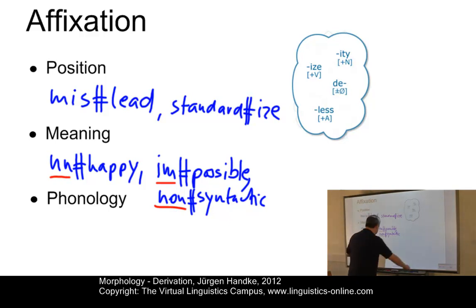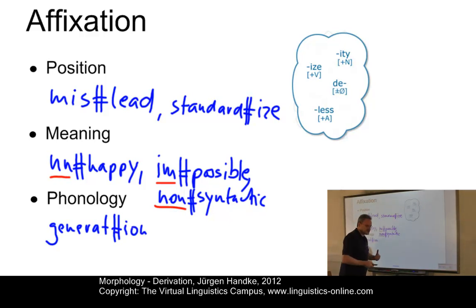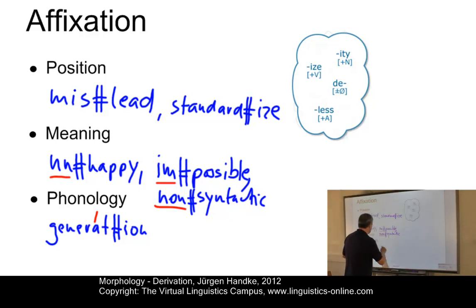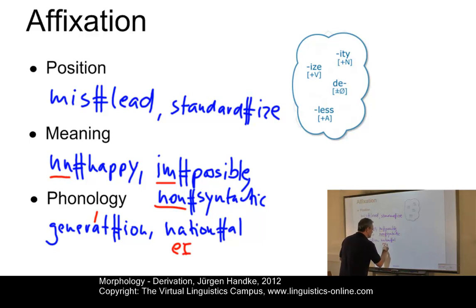Let's look at some examples. In something like 'generation,' we can observe a stress shift from 'generate' to 'generation.' Or we may observe something like a vocalic change. In 'national,' we have a vocalic change where the original vowel in 'nation' changes in 'national.'